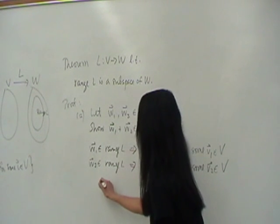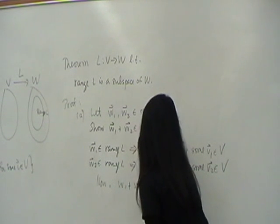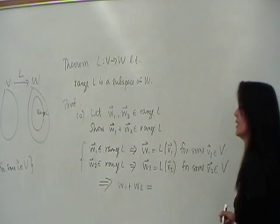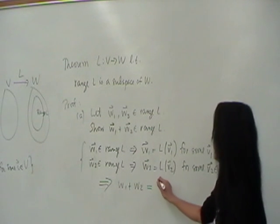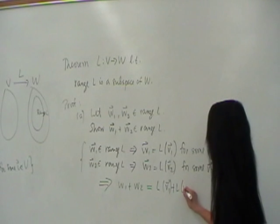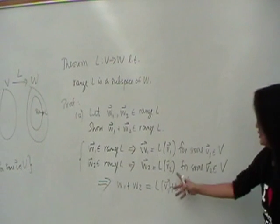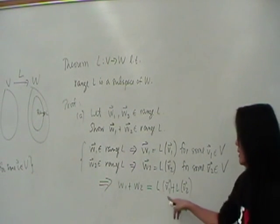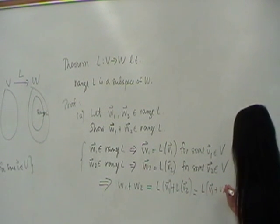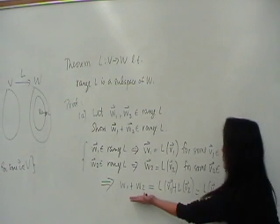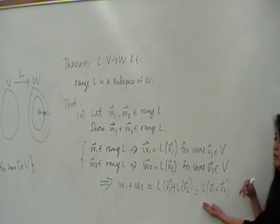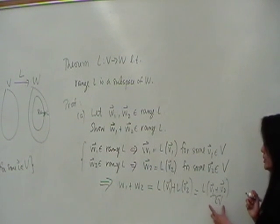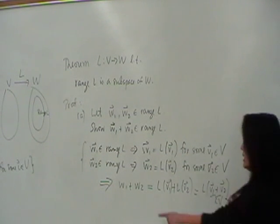So we want to show that W one plus W two is in the range of L. So now do you see what the next thing is that I will write? You have to form L of V one plus L of V two. The implication of these two, right? These two will imply that W one plus W two is equal to L of V one plus L of V two. So then you have L of V one plus L of V two, but L being a linear transformation means I can put this together and I have L of V one plus V two.